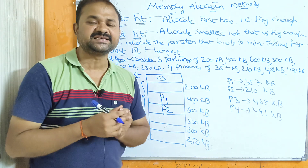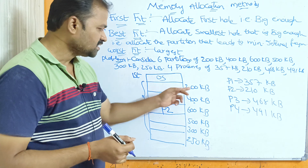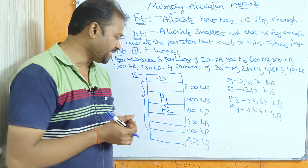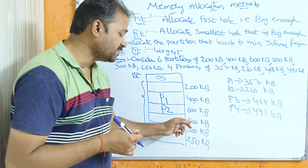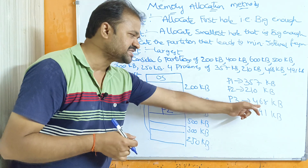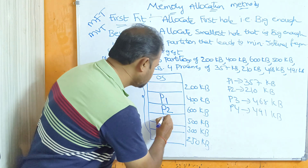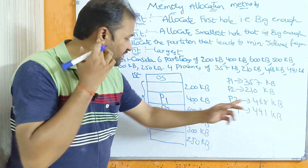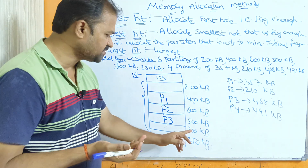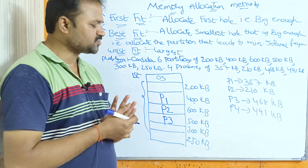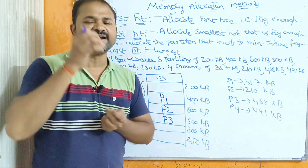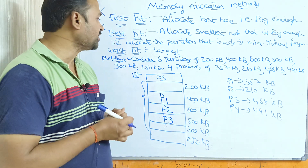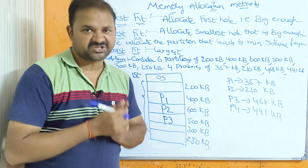For P3 (468 KB) and P4 (491 KB), the remaining partitions are 500 KB, 300 KB, and 250 KB. It is not possible to store P4 in the remaining partitions using first fit, so P4 cannot be allocated.